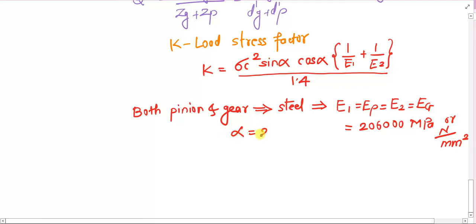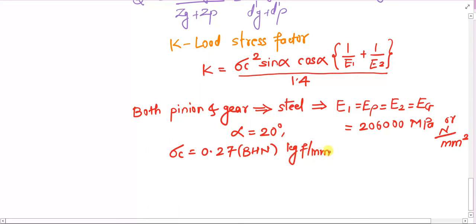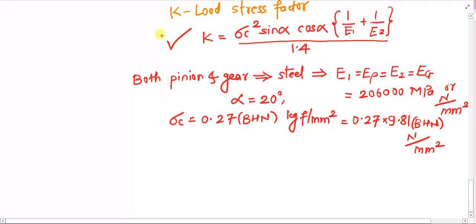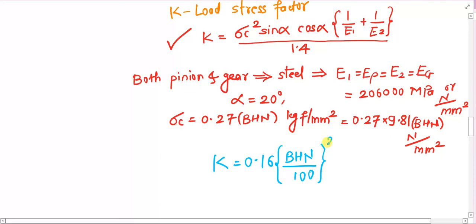For a 20° pressure angle system, with a surface hardness of 0.27 on the Brinell hardness scale in kgf/mm², converting to standard units (0.27 × 9.81 N/mm²), and substituting all values into the equation for k, we arrive at the simplified expression: k = 0.16 × (BHN/100)². This simplified relation will be used when solving numericals where both gear and pinion are made of steel.